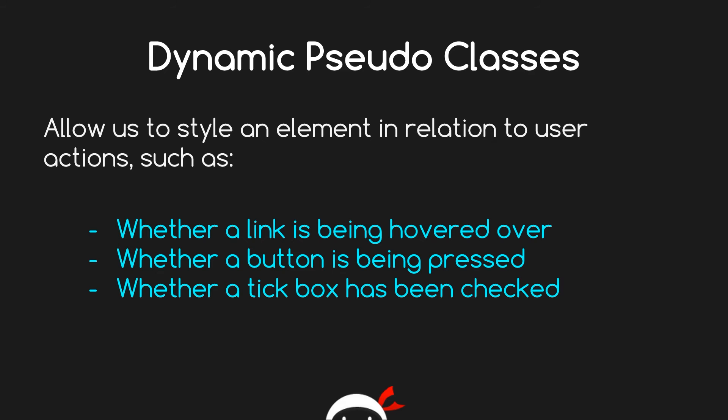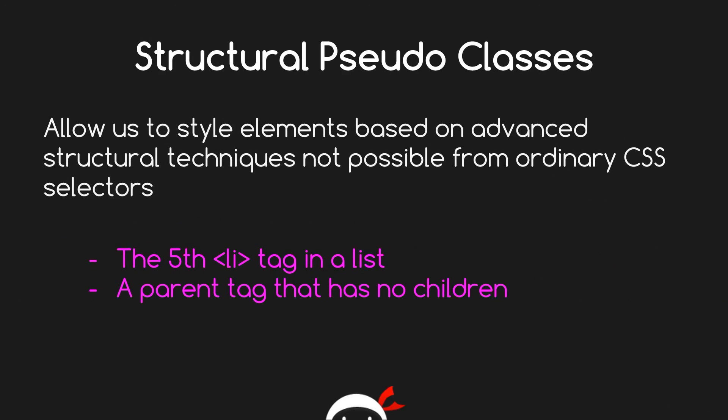So what's the other group? Structural pseudo classes are used to target more advanced structural elements that we couldn't normally target with normal CSS rules. Say you've got a ul list with 10 li tags, and none of them have classes or IDs — you can't target specific li tags that way. The only way to target, say, the fifth or seventh li tag would be to use a structural pseudo class. Or you could use a structural pseudo class to target a parent element that has no children, and say you don't want to display it on the page.